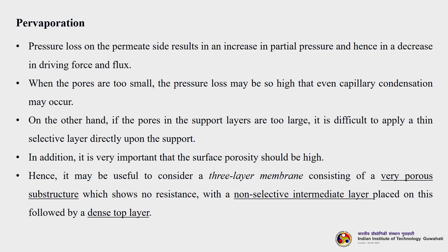The requirements for the substructure are the same as for gas separation membranes: an open substructure to minimize resistance to vapor transport and avoid capillary condensation, and a high surface porosity with narrow pore size distribution. Pressure loss on the permeate side results in an increase in partial pressure and hence a decrease in driving force and flux. When pores are too small, the pressure loss may be so high that capillary condensation may occur. On the other hand, if pores in the support layer are too large, it is difficult to apply a thin selective layer directly upon the support.